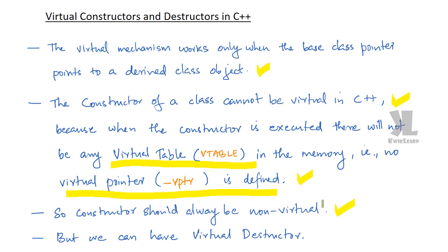For a C++ class, the constructor should always be non-virtual. But we can have a virtual destructor. We cannot define the constructor as virtual — constructors should always be non-virtual.